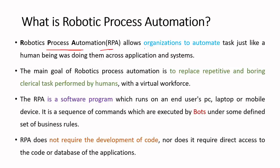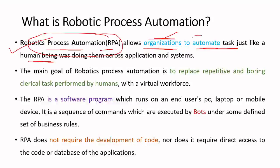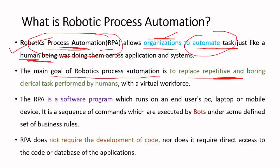Robotic Process Automation is used by organizations and industries to automate tasks done by human beings — though not all tasks, which we will redefine as the course goes on. In another way, RPA can be defined as technology whose main goal is to replace repetitive and boring tasks performed by humans. Let me give a simple example for this.